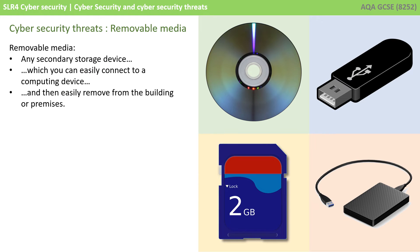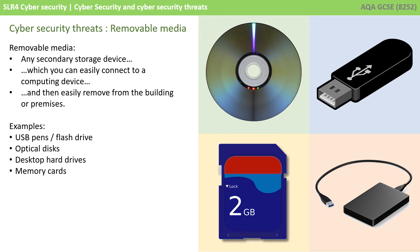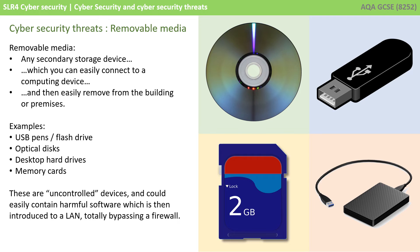Another big threat is removable media — any secondary storage device which you can easily connect to a computing device and then remove from the building or premises. Typical examples include USB pens and flash drives, optical disks, portable hard drives and memory cards. These are uncontrolled devices and could easily contain harmful software in the form of malware, which is then introduced to a local area network, totally bypassing a firewall. This is not necessarily done with intent — it could be purely accidental. Many schools prevent USB pens from being brought onto premises or disable them entirely.